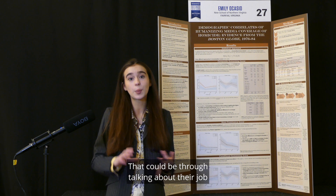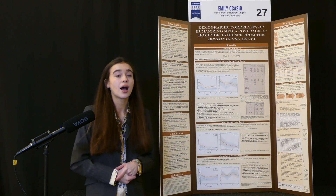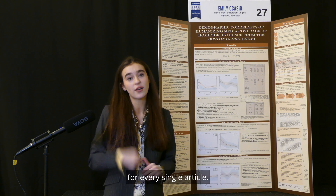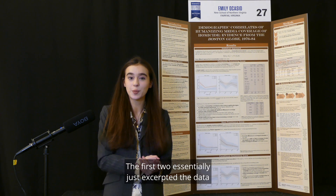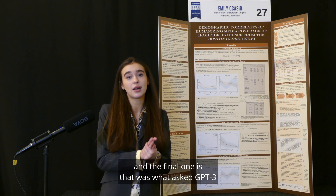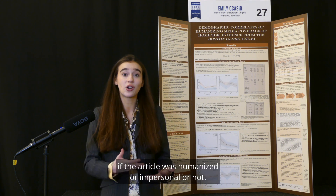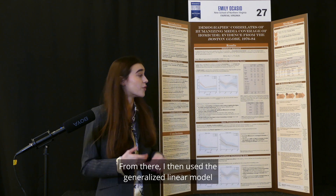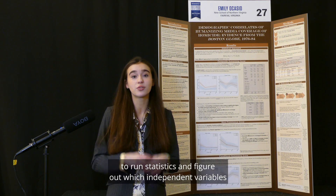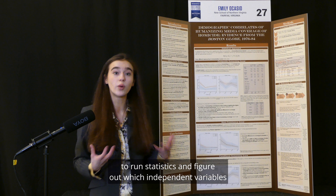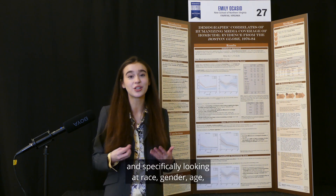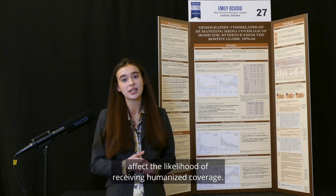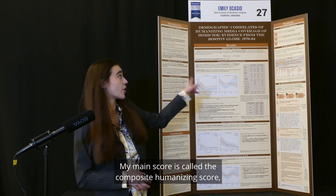That could be through talking about their job, a quote, or their family. The way I used GPT-3 was through three rounds of prompting for every single article. The first two essentially just excerpted the data, and the final one asked GPT-3 if the article was humanized or impersonal. From there, I used the generalized linear model to run statistics and figure out which independent variables — specifically race, gender, age, and the intersections between them — affect the likelihood of receiving humanized coverage.